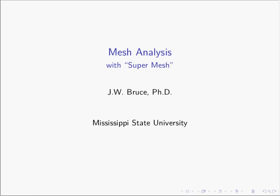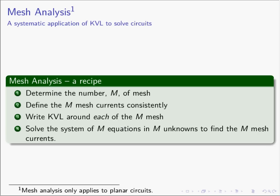So before we get started, let's review what mesh analysis is. Mesh analysis is a systematic application of KVL to solve circuits. First step: determine the number of mesh, and we'll call that number M. Remember, mesh is a loop that does not contain any other smaller loops within it. Next, we need to define mesh currents, and there are going to be M of them. Define them consistently — they all need to go the same direction or things aren't going to work out.